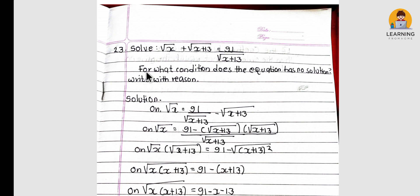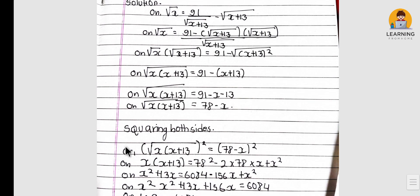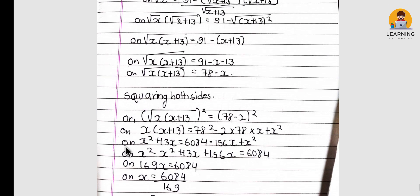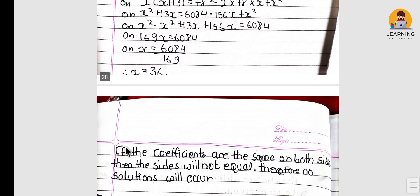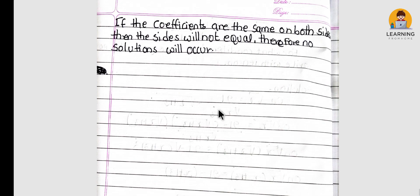For what condition does a linear equation have no solution? If the coefficients of the variable are the same on both sides but the constants are different, then no solution will occur.